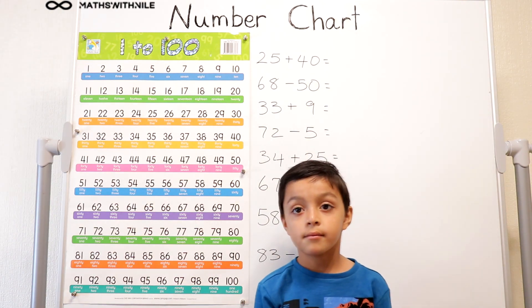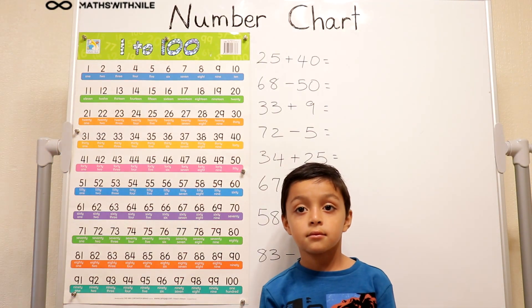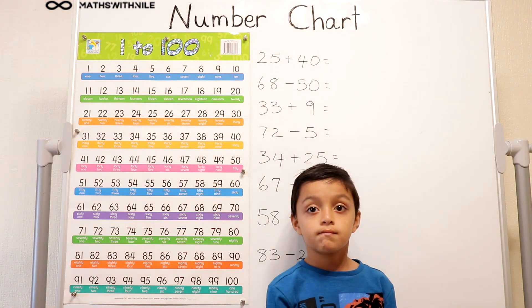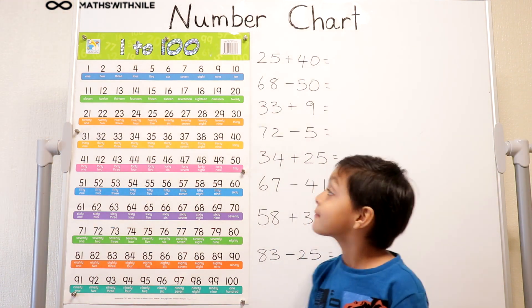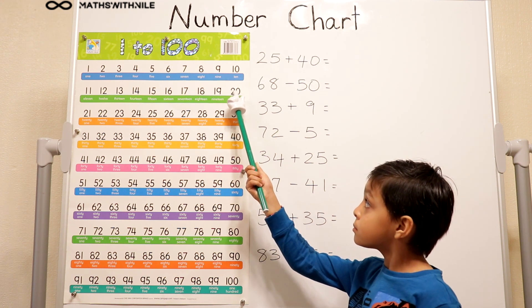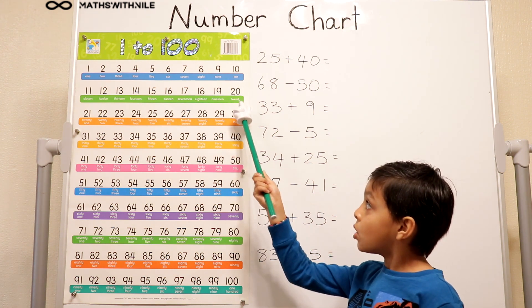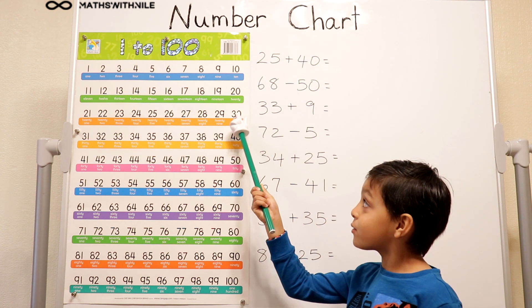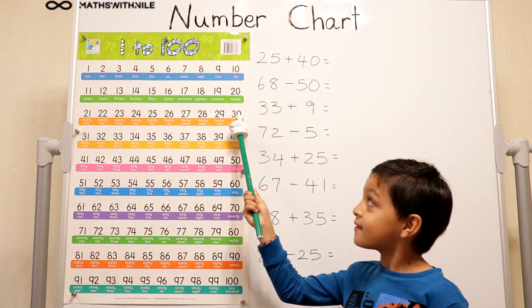So we know if we go forward we're adding, if we go backwards we're taking away. Let's see what happens if we go up or down. Can you point to number 20? What happens if we move one step down? We add 10 and land on 30. So 20 add 10 is 30.